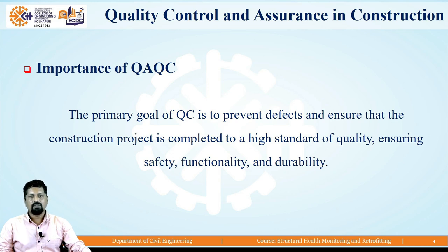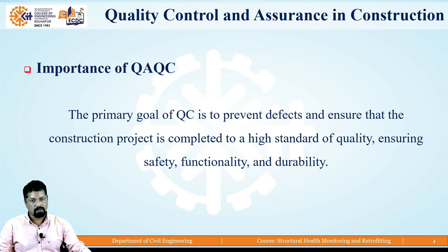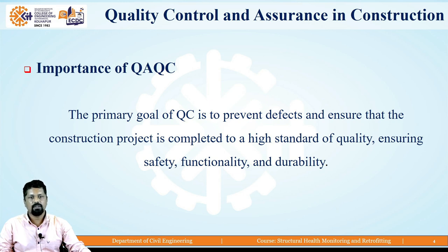The primary goal of QC is to prevent defects. Whenever we prevent defects, we restrict different flaws or bad practices in construction, which ultimately sets a good quality standard. The primary goal of QC is to ensure that a construction project is completed to a high standard, ensuring safety, functionality and durability of the structure.